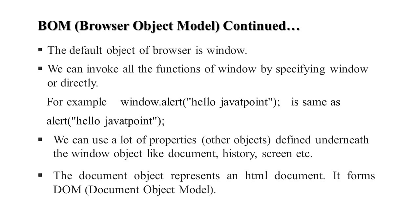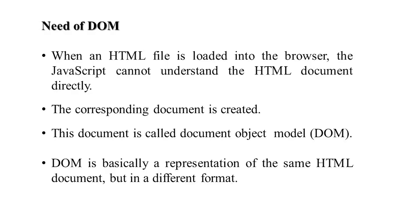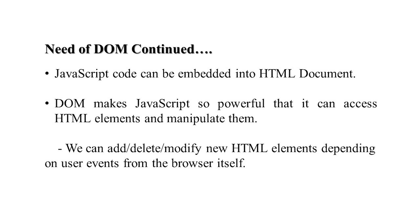The document object represents the HTML document and forms the DOM — the Document Object Model. This is the basis of DOM. Whenever an HTML file is loaded in the web browser, JavaScript cannot understand the HTML document directly. So a corresponding document is created, called the Document Object Model. It is basically a representation of the same HTML document but in a different format.